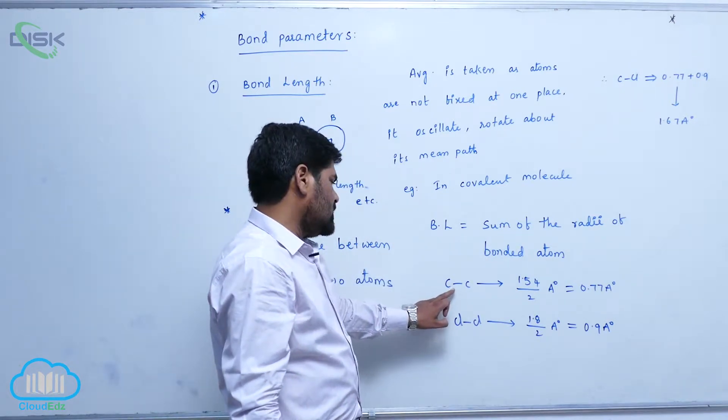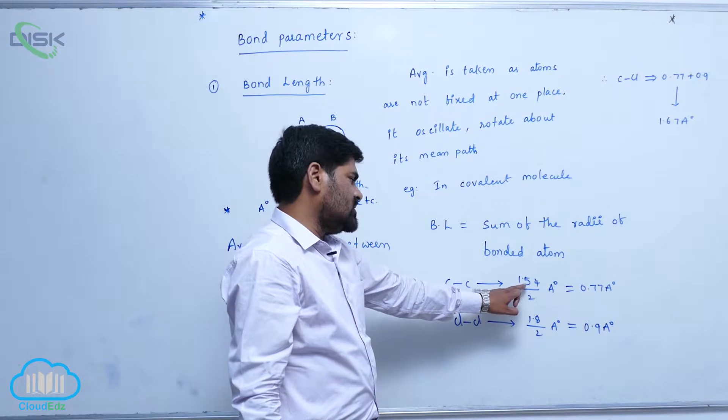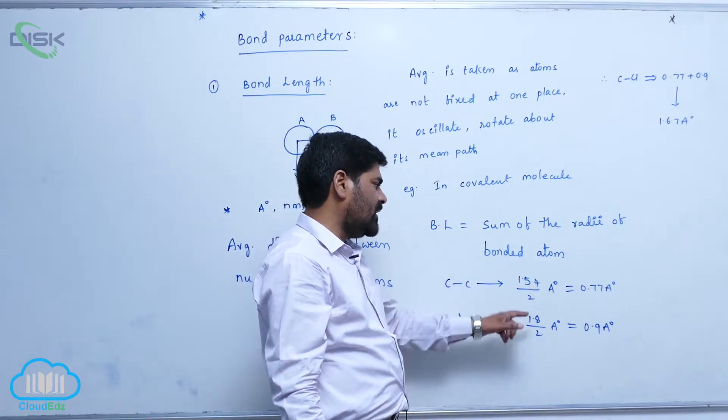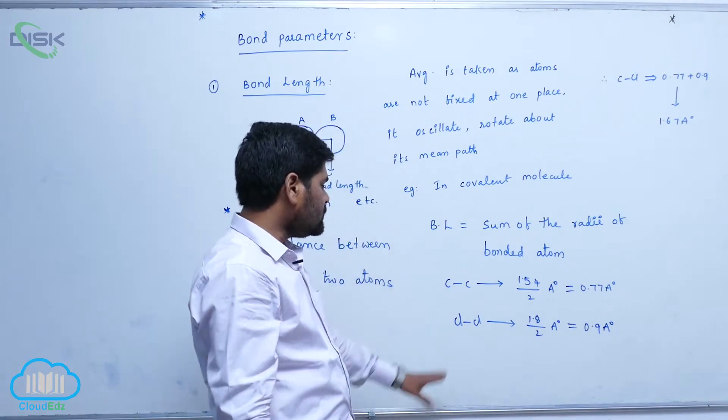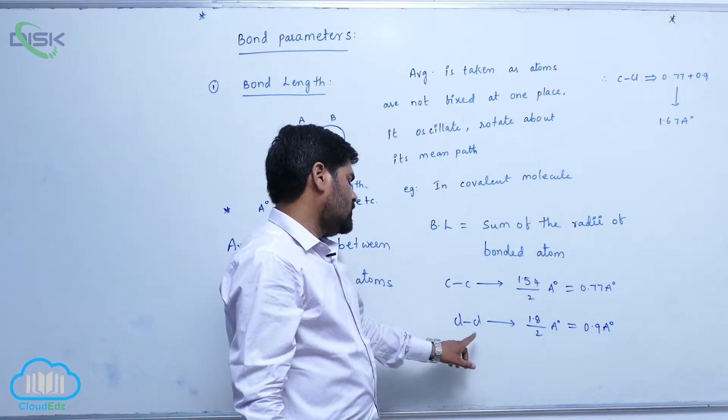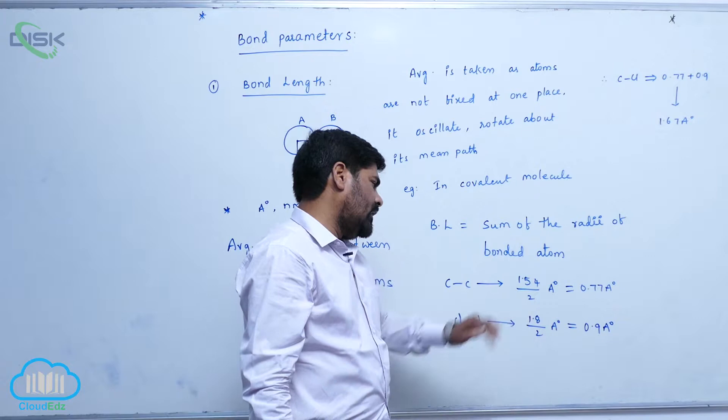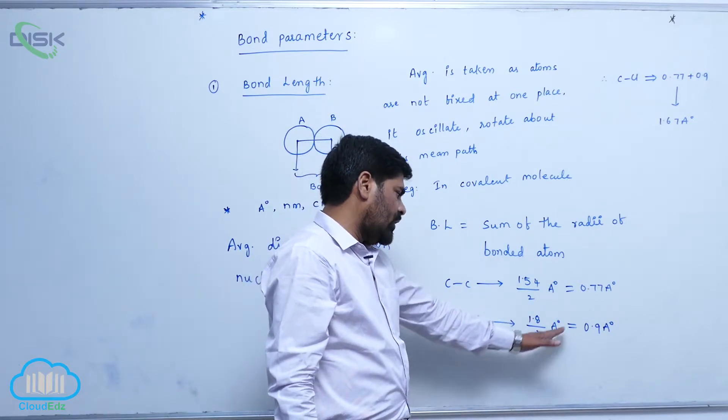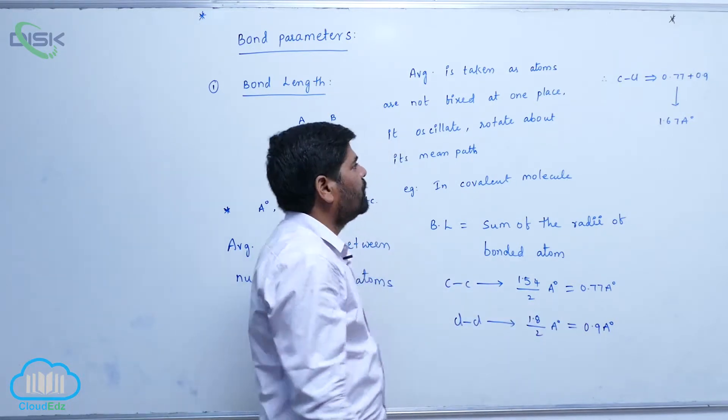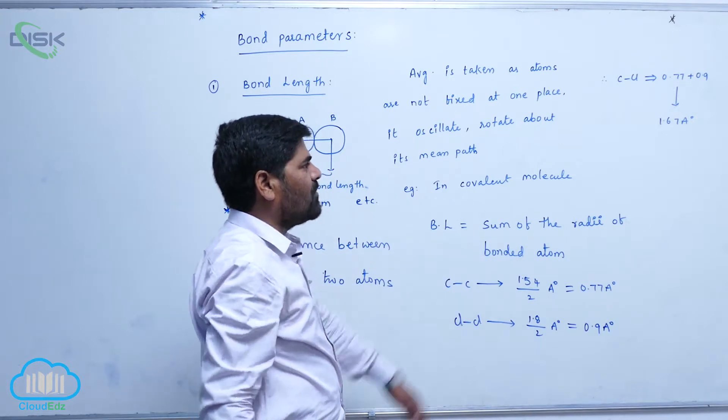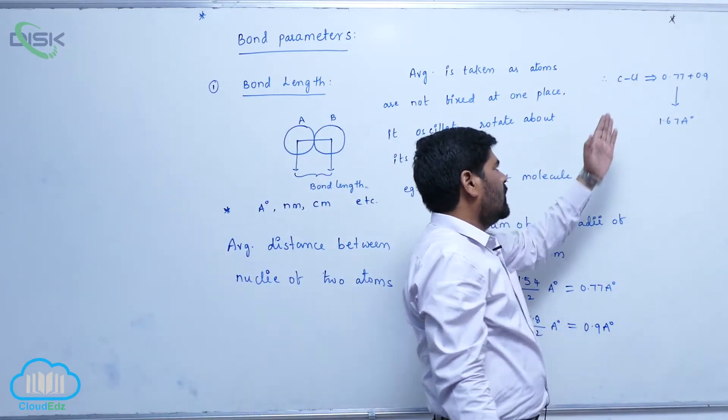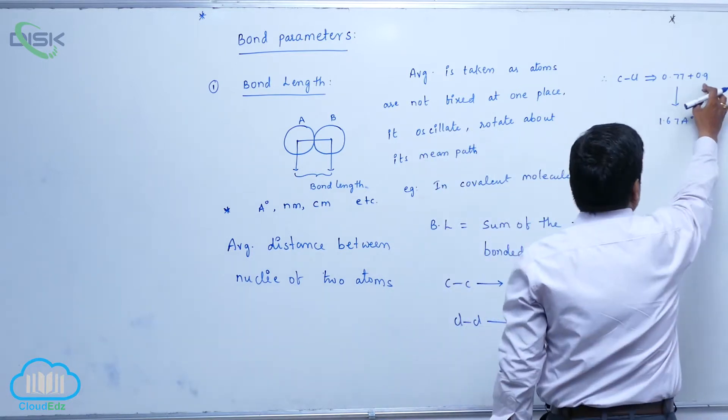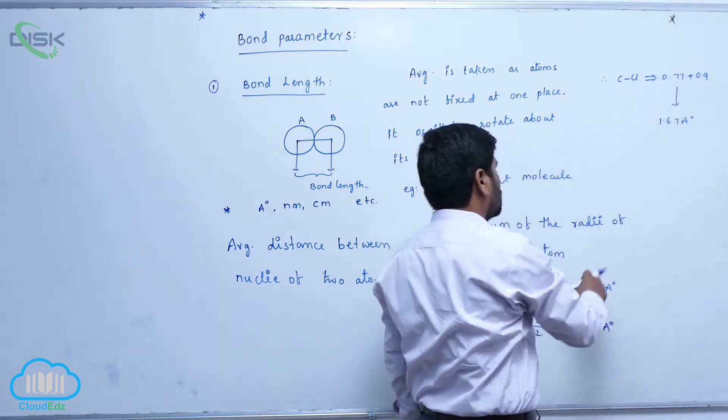For example, C single bond C, this is 1.54 angstroms by 2, so 0.77 angstroms. Chlorine-chlorine bond length is 1.8, for each chlorine is 0.9 angstrom. If you want the bond length of carbon-chlorine, it is 0.77 plus 0.9, so 0.9 belongs to chlorine, 0.77 belongs to carbon.